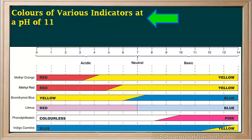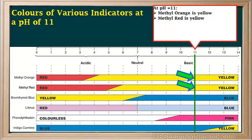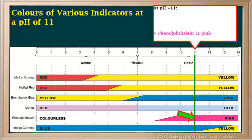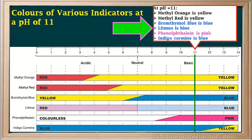Now let's find the colors of all of these indicators at a pH of 11. If we draw a line through the chart at pH 11, we can see that at a pH of 11, methyl orange and methyl red would be yellow. Bromothymol blue, litmus, and indigo carmine would all be blue. And phenolphthalein would be pink. Testing a solution with a number of different indicators will help us estimate its pH.